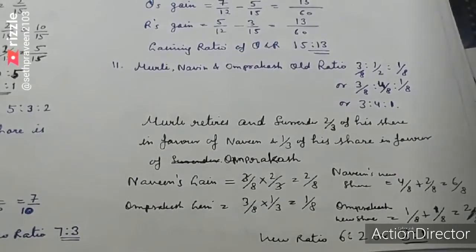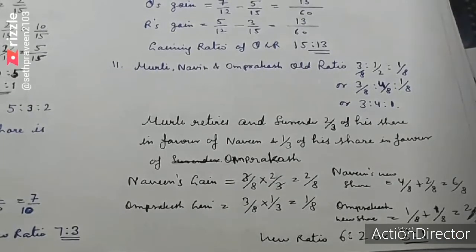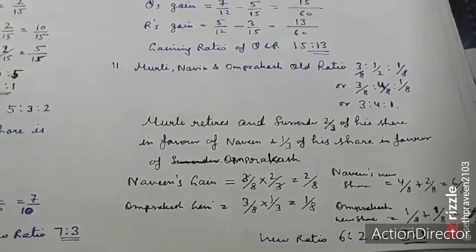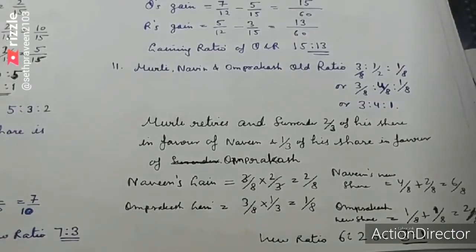Look at Naresh's share. Naveen has gained the share of Murali, which is 3 by 8 times 2 by 3, which is 2 by 8 or 1 by 4, but 2 by 8 is better because Umprakash's gain is also 1 by 8. So the gaining ratio is 2 to 1.